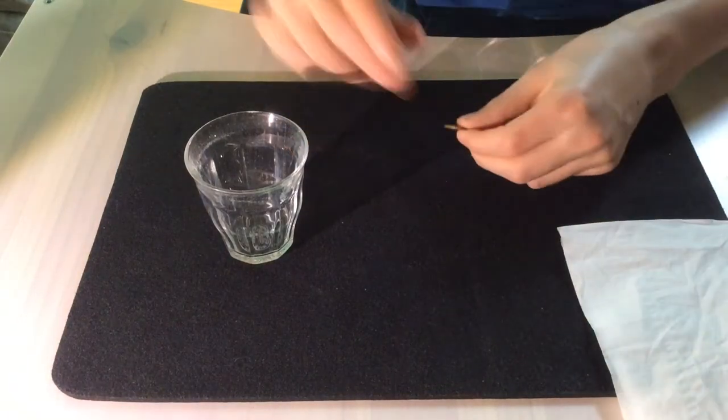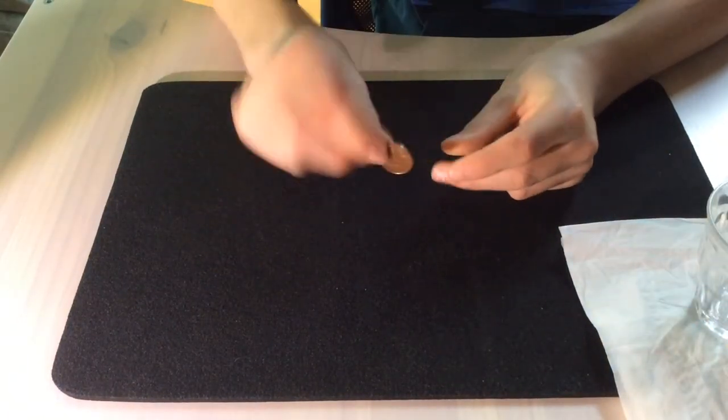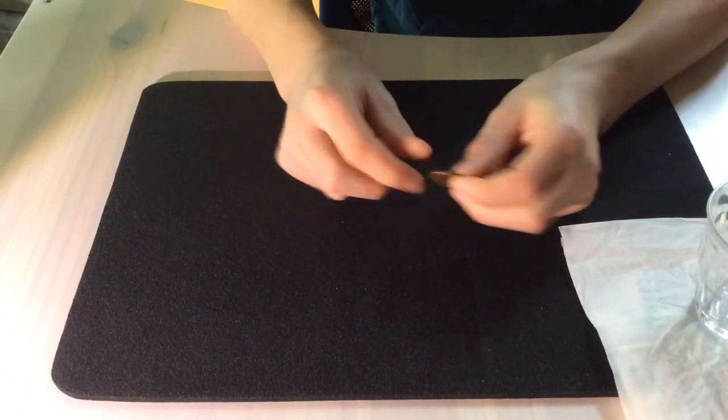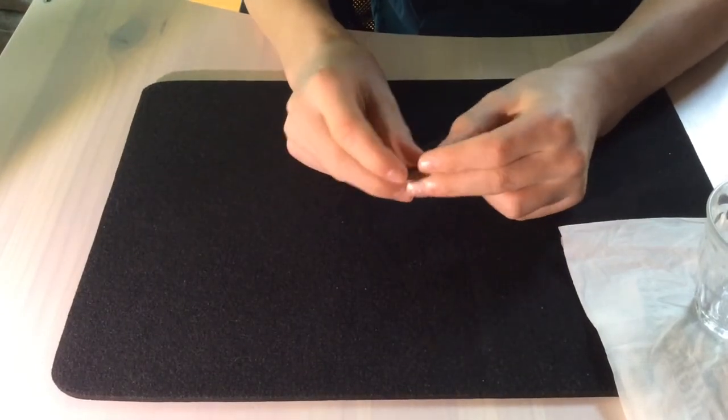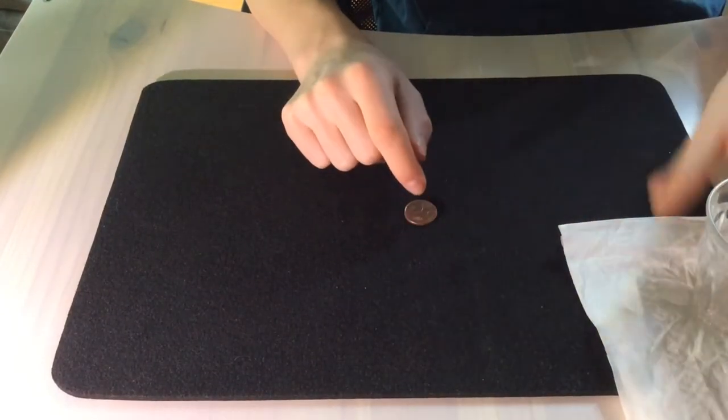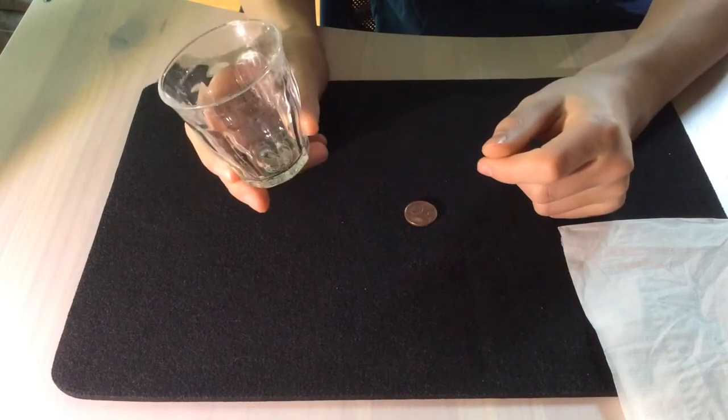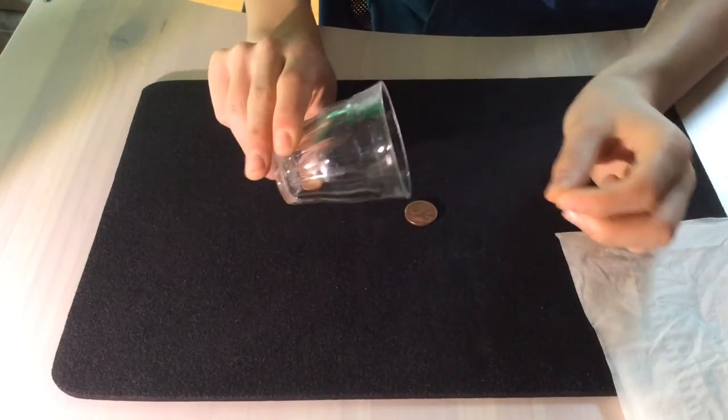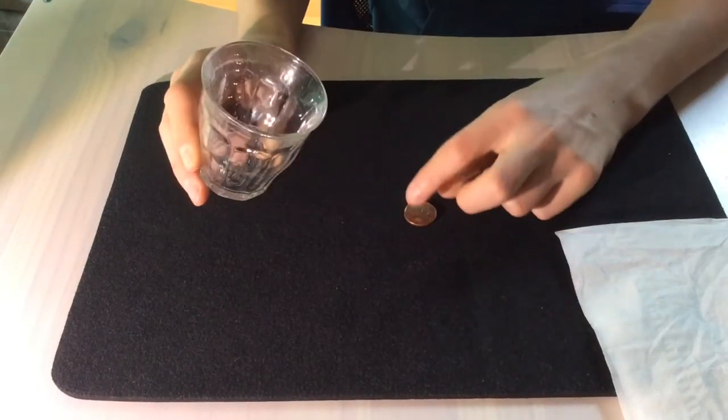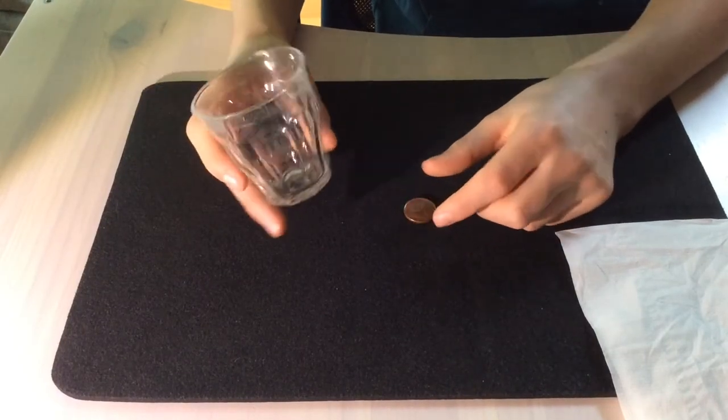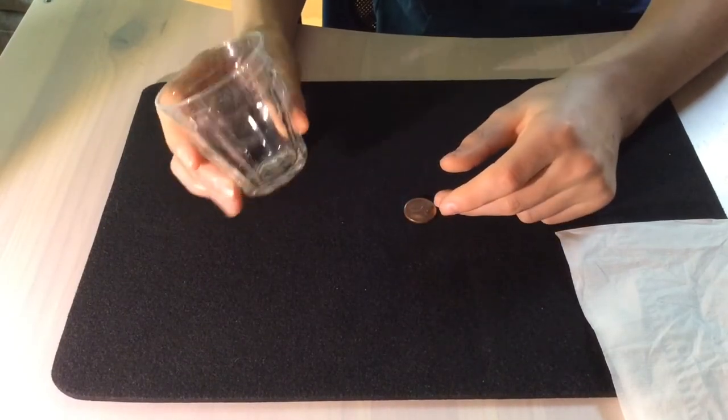So what you're going to start out with doing is you're going to show the audience your coin. You can flick it and you can also even knock on the table to show that there's no props used. Place down the coin, and now you're going to take your cup or your salt shaker. If you want to, you can pour a bit of salt over the coin. I think this adds a bit of realism to the trick, but you don't have to do that.